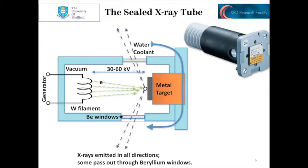As we said, this process generates an awful lot of heat as well. So we need to continuously cool the X-ray tube with water — typically in the region of 4 to 6 liters per minute. There is a serious need for cooling of these devices to prevent them from melting down.